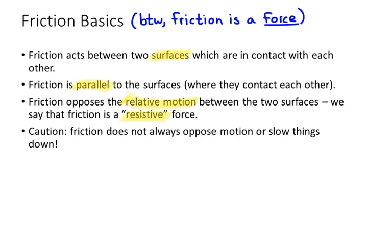Be careful with the idea that friction is a resistive force. Notice it opposes the relative motion between the two surfaces — not motion in general. That word 'relative' is important. So friction does, in certain situations, cause things to speed up. One example is your car: when you press the gas pedal, it is the friction between your tires and the ground that causes your car to go forward. If you're on ice, pressing the gas pedal does nothing because there is no friction to push you forward.